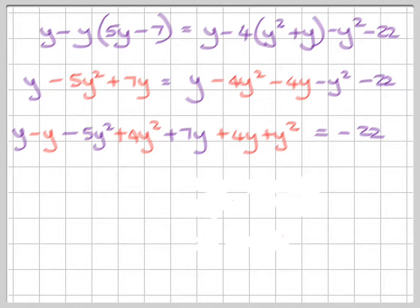Now let's simplify on the left and see what we come up with. We've come up with 11y because plus y minus y cancels out. -5y² + 4y² is -y² plus this y² here cancels all of those out. So all the y² are cancelled out. And we're left with 7y + 4y and that comes to 11y. And then the other side we are left with equals -22.